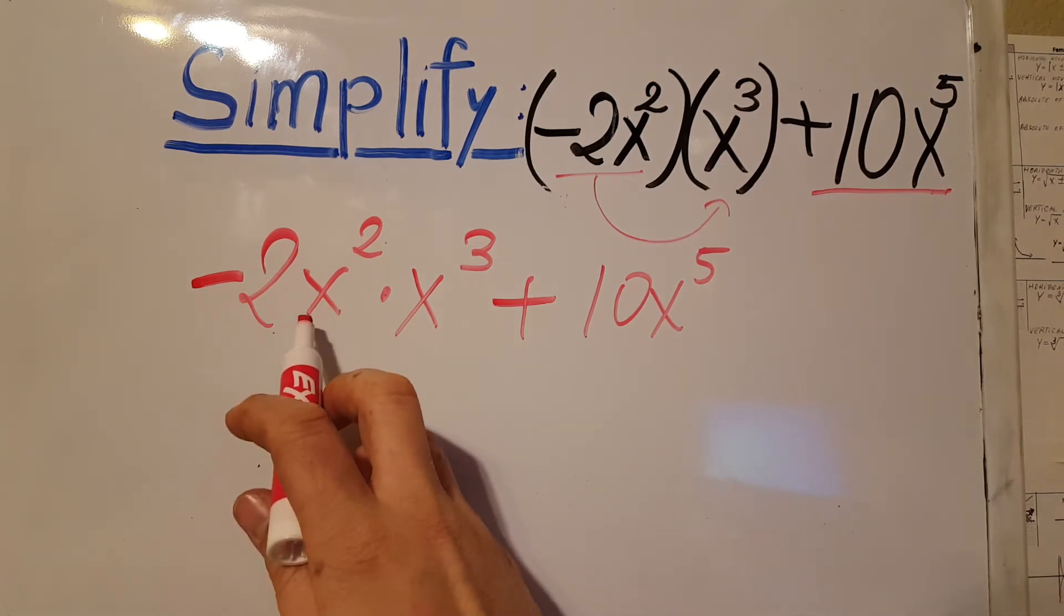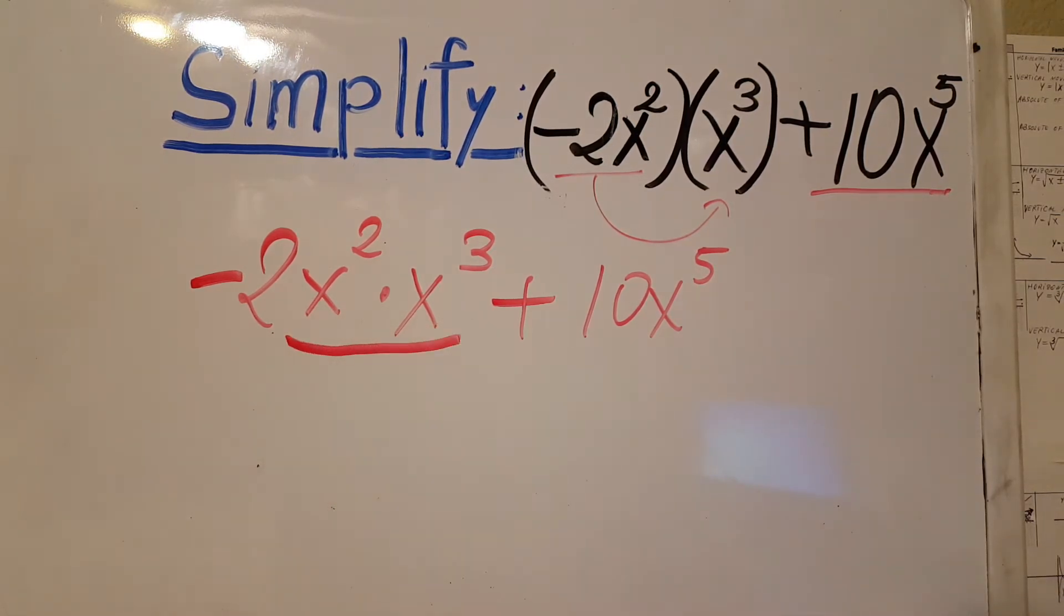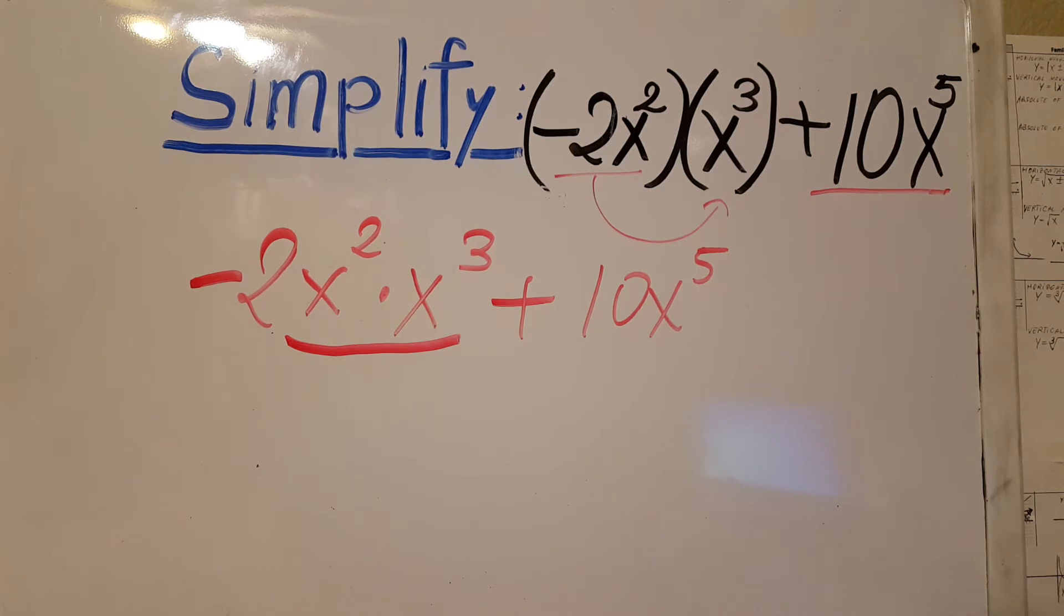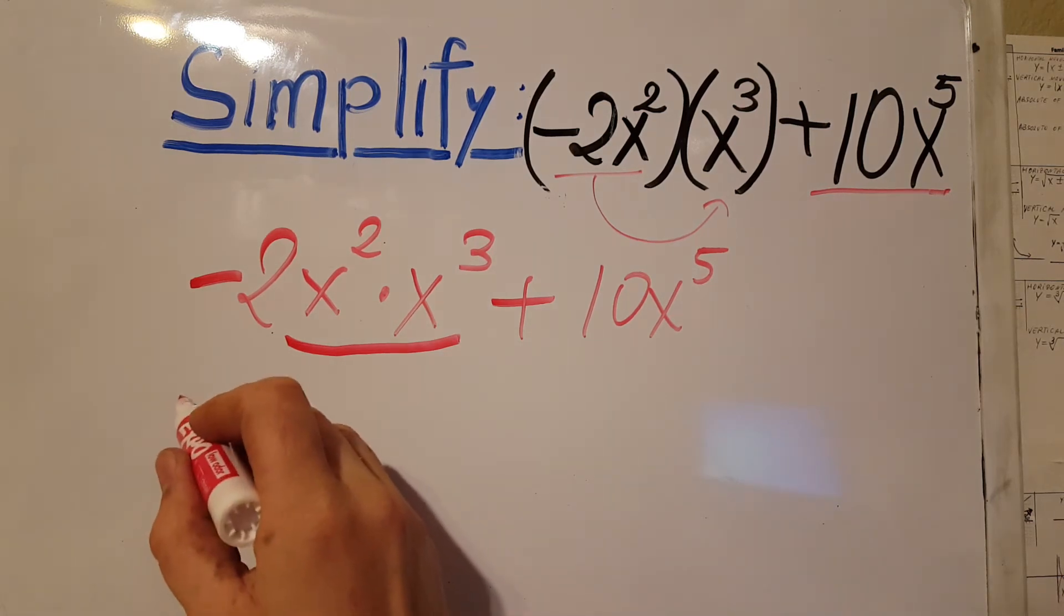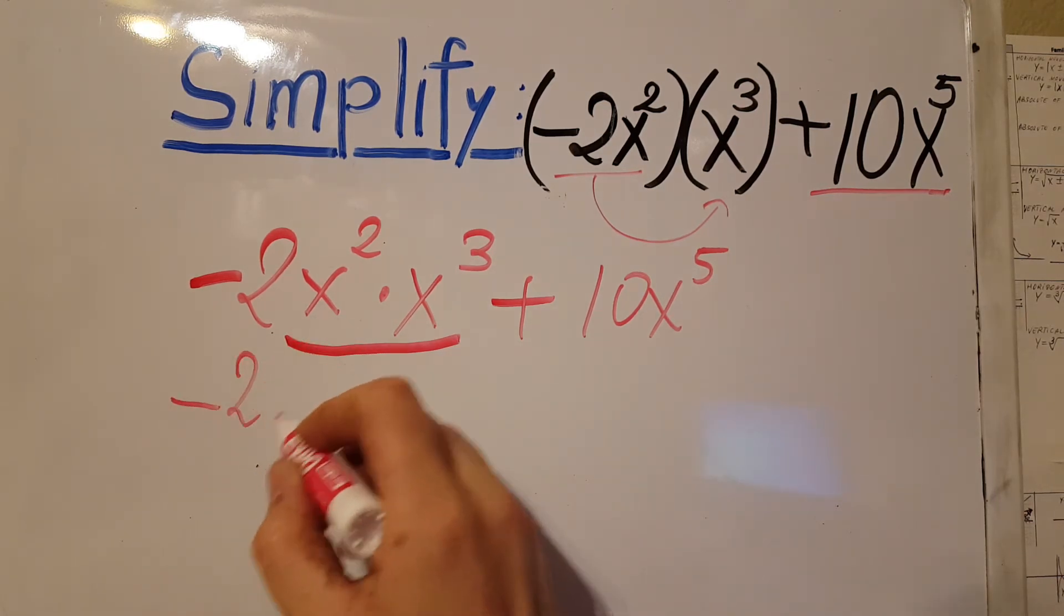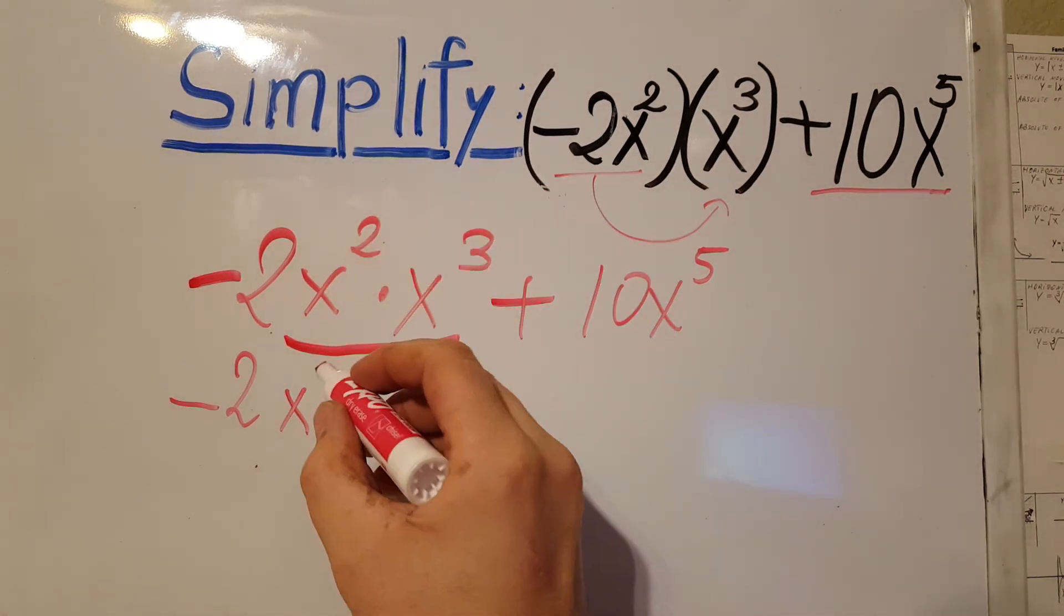Now we're gonna take a look at these two over here. We're gonna notice that we can use the rule of exponents, and therefore we're gonna get negative 2x on the 2 plus 3.